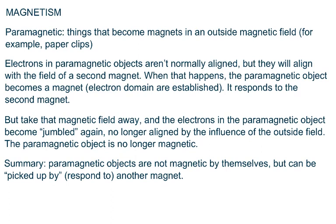Paramagnetic objects are not magnetic by themselves, but they respond to another magnet — paper clips are a good example. In a junkyard, a huge electromagnet is dropped into a pile of metal and turned on by putting current through it. Anything paramagnetic jumps to the electromagnet. This lets them make two piles: magnetic metals and non-magnetic metals like aluminum and copper, which are worth a lot of money.